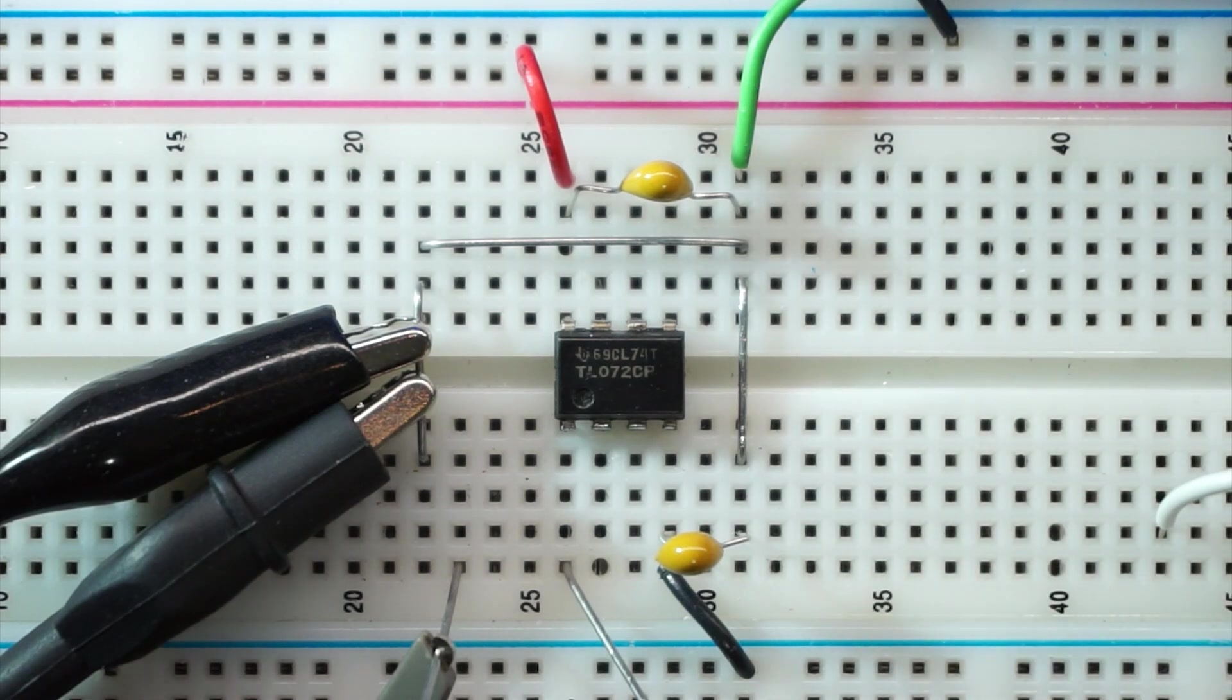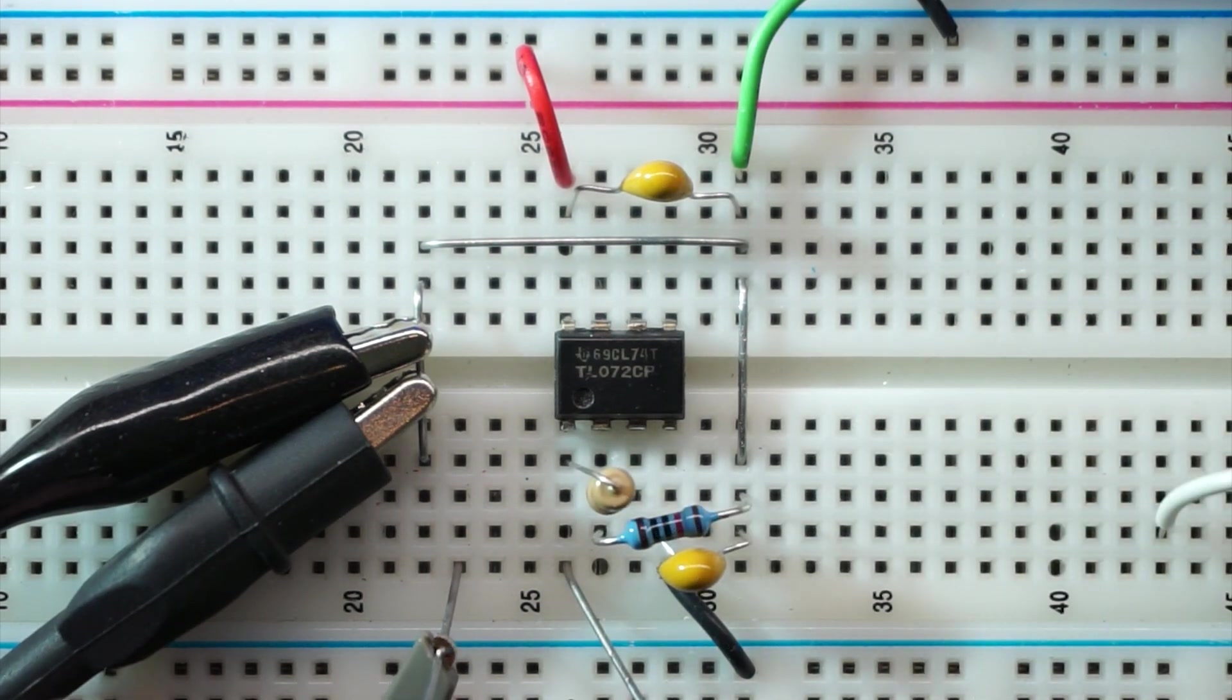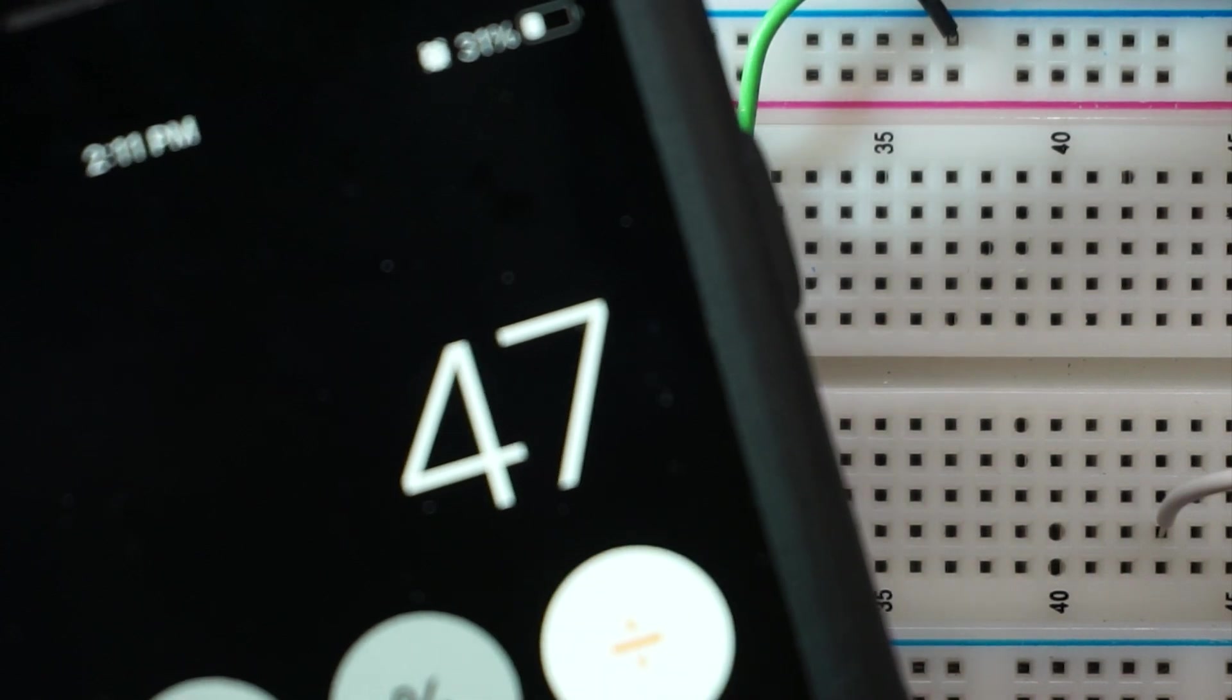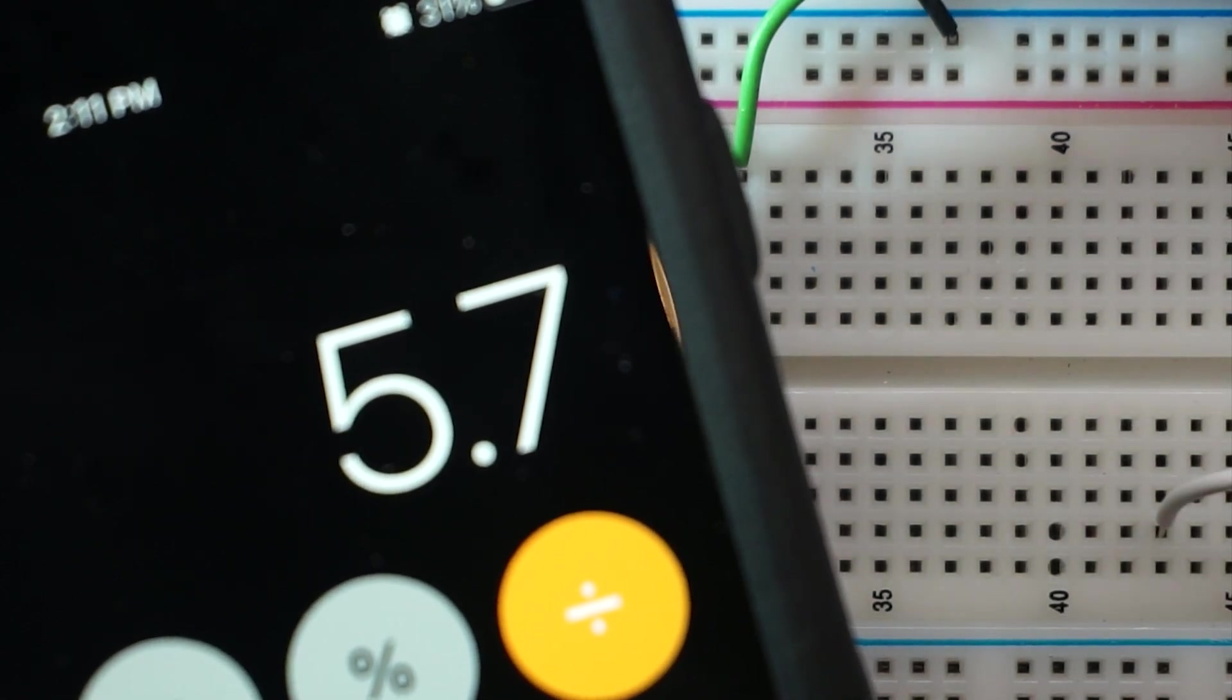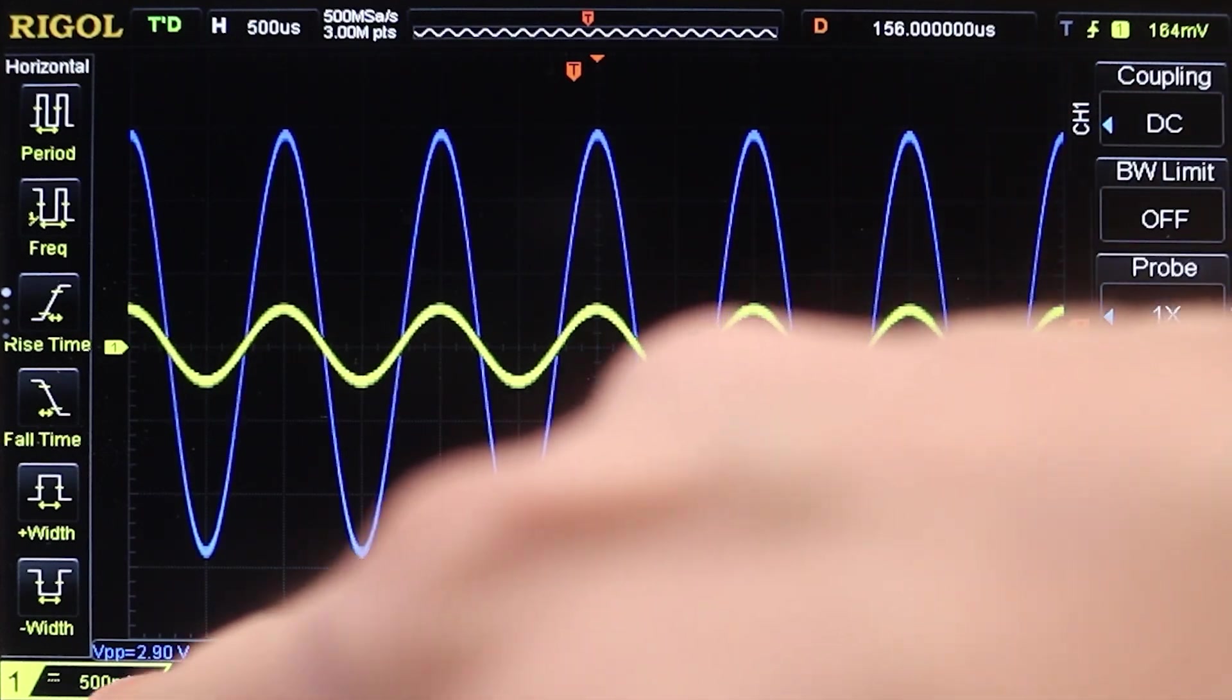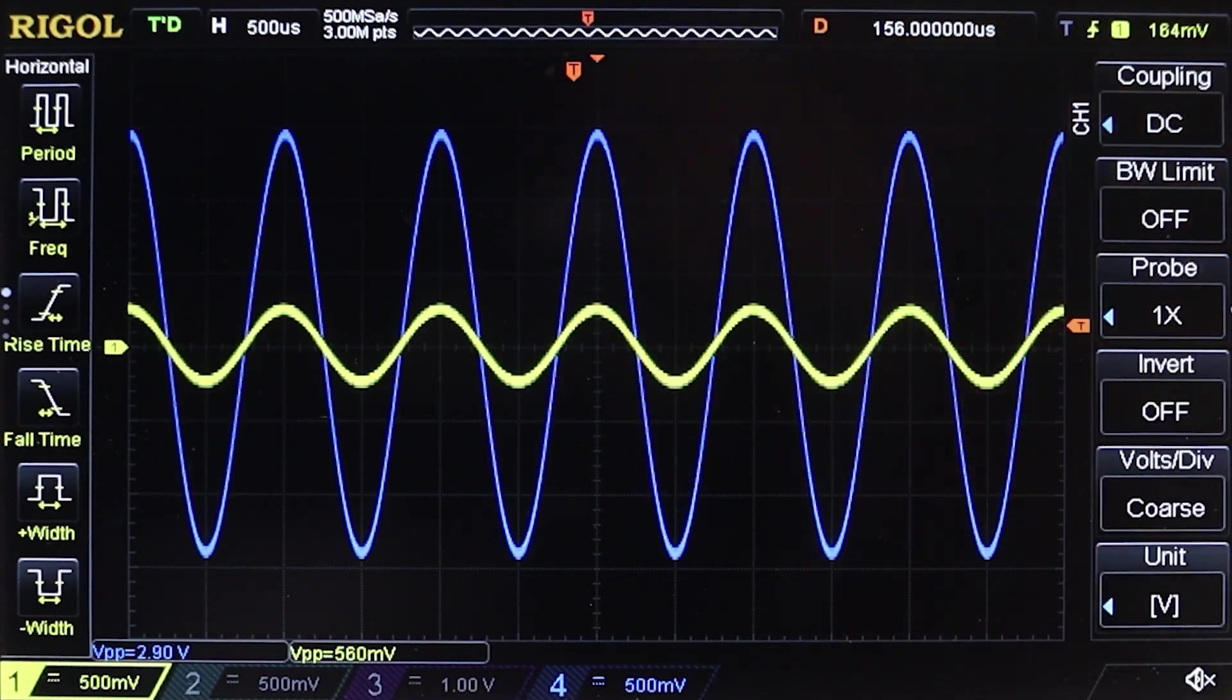Let's reconfigure the op-amp as a non-inverting circuit using our 47k feedback resistor from pin 1 to 2, and a 10k resistor from pin 2 to ground forming a voltage divider. We feed the input at pin 3. The gain is 47k divided by 10k, which is 4.7 plus 1, so our gain is 5.7 times 0.5 volts, giving us 2.85 volts peak-to-peak. On the scope, we see the output is in phase with the input and measures 2.9 volts.